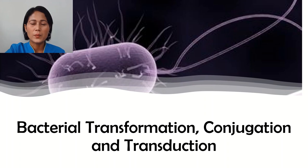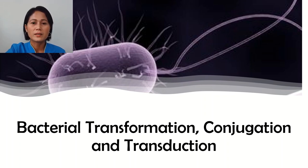Bacterial cells reproduce by simply replicating their chromosome and dividing into two daughter cells. This is called binary fission. These two daughter cells are identical with each other and identical to the parent cell. Thus, over time, asexual reproduction can result in a population of hundreds of thousands of bacterial cells, all of which are genetically identical to a lone parent cell. Given their asexual mode of reproduction, we may think that bacteria are boring and lacking in genetic variability.